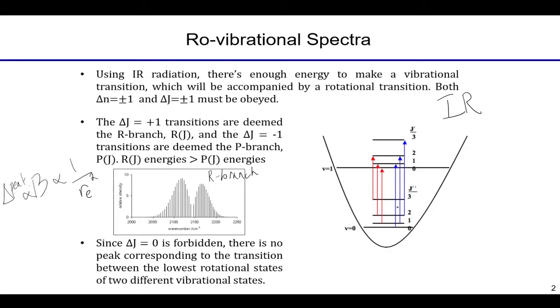Each peak comes from an exact starting J state — a starting rotational state. The number of molecules that undergo that transition, and thus the intensity of the peak, is dependent on the thermal population of that level. The length of the arrow shows the difference in energy and hence where the peak falls on the x-axis, but it doesn't tell you anything about the intensity. The intensity depends on how many molecules are in that ground state. This is not done on a single molecule — you always have a collection of molecules, so we're dealing with a thermal distribution.